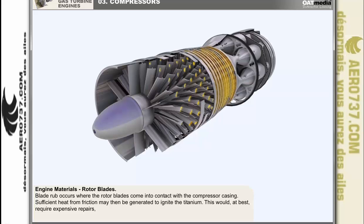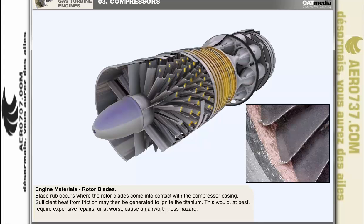Another problem is blade rub, where the rotor blades come into contact with the compressor casing. If blade rub becomes excessive — which might occur through mechanical failure — sufficient heat from friction would be generated to ignite the titanium. This would at best require expensive repairs, or at worst cause an airworthiness hazard.